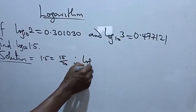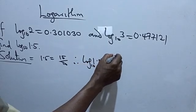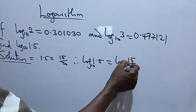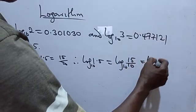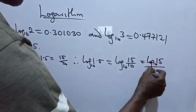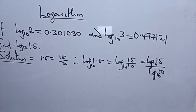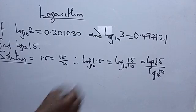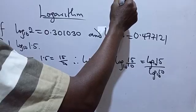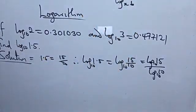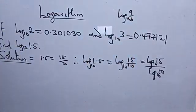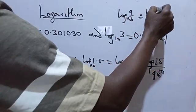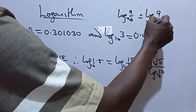Therefore log 1.5 base 10 is the same as log(15/10) base 10. This is the same as log 15 base 10 over log 10 base 10. According to the law of logarithm, log(a/b) base x equals log a base x over log b base x.